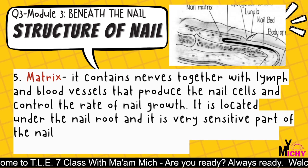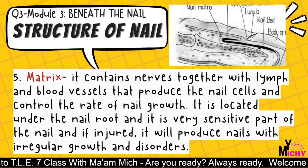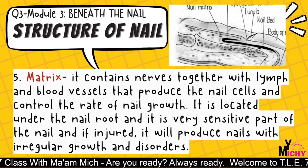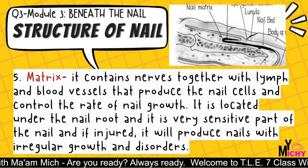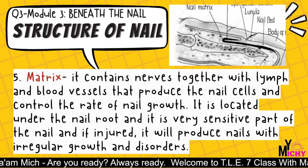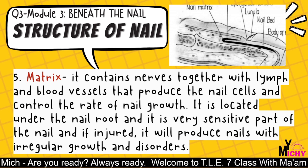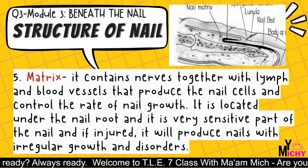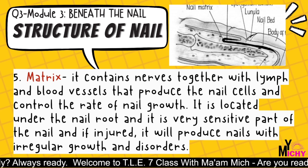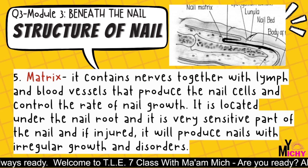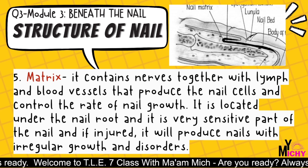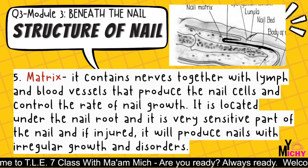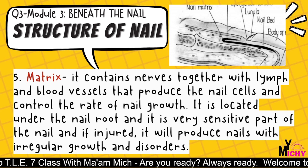The matrix contains nerves together with lymph and blood vessels that produce the nail cells and control the rate of nail growth. It is located under the nail root and is a very sensitive part of the nail. If injured, it will produce nails with irregular growth and disorders.